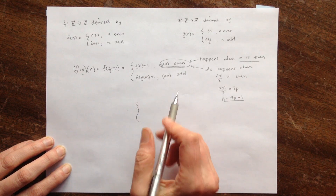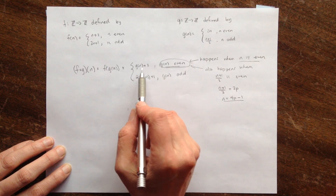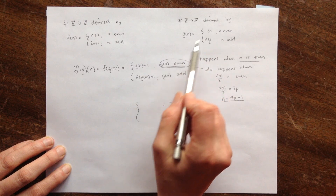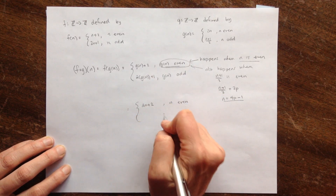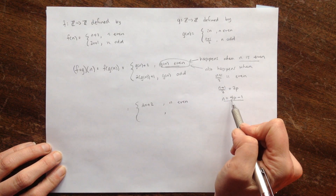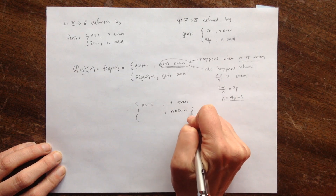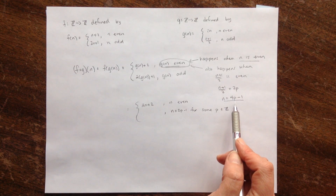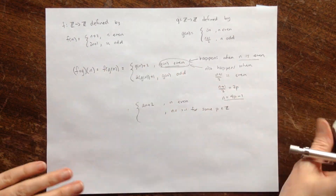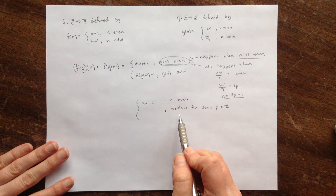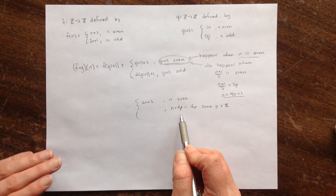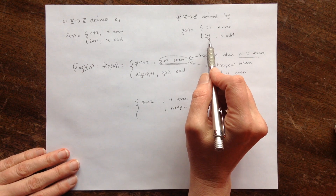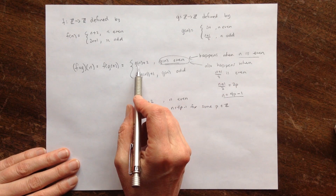Let me start setting this up. If n is even, then g of n is even and we use the first rule, giving g of n plus 2, which is 2n plus 2 — when n is even. But g of n is also even sometimes when n is odd, specifically when n looks like 4p minus 1 for some integer p. In that case n is odd, so g of n is (n plus 1) over 2, and you're going to get (n plus 1) over 2 plus 2.